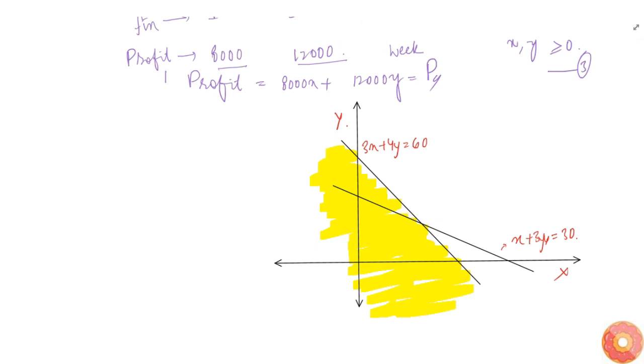Region R which satisfies X plus 3Y less than 30 will be the region downwards of that line, given by this blue region. As you can see, this green region is a combination of two things.